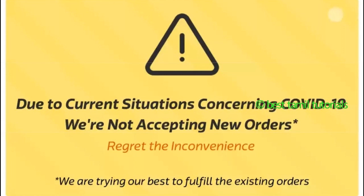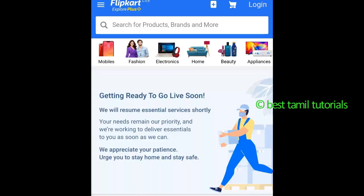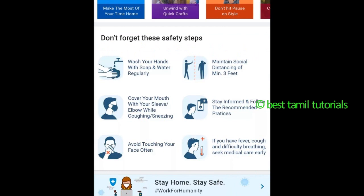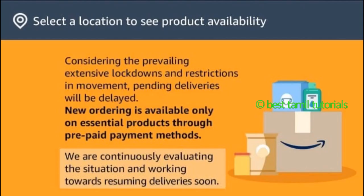Scammers ask you to send information via email. Due to the lockdown they say they can't deliver, but after 21 days they claim they can. They may ask you to transfer money to a bank account. Check the safety measures on the official website before taking any action.